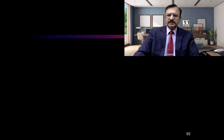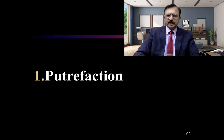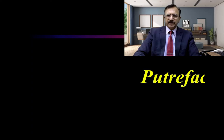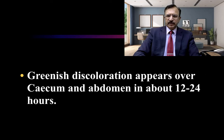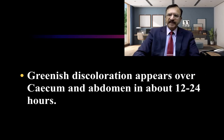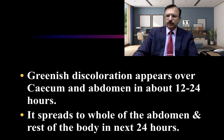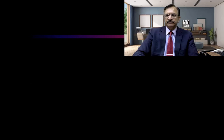Starting with the late changes: these are putrefaction, mummification, and adipocere formation. The first sign of putrefaction is greenish discoloration, which appears on the flanks — in the area of the cecum, the right iliac fossa — and it appears approximately 12 to 24 hours after death. It then spreads to the whole abdomen and the rest of the body in the next 24 hours.